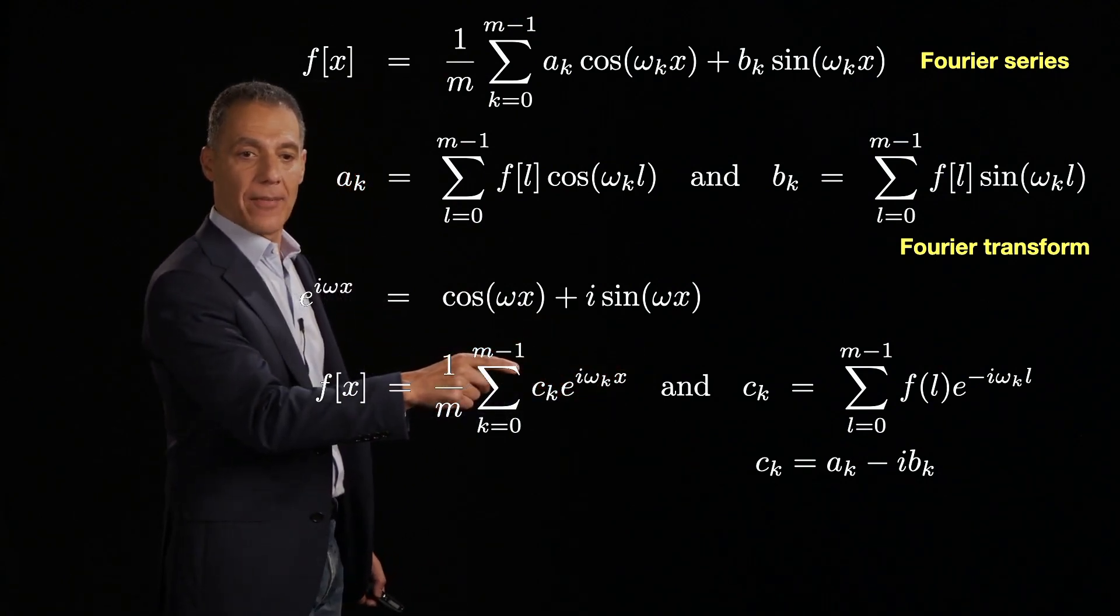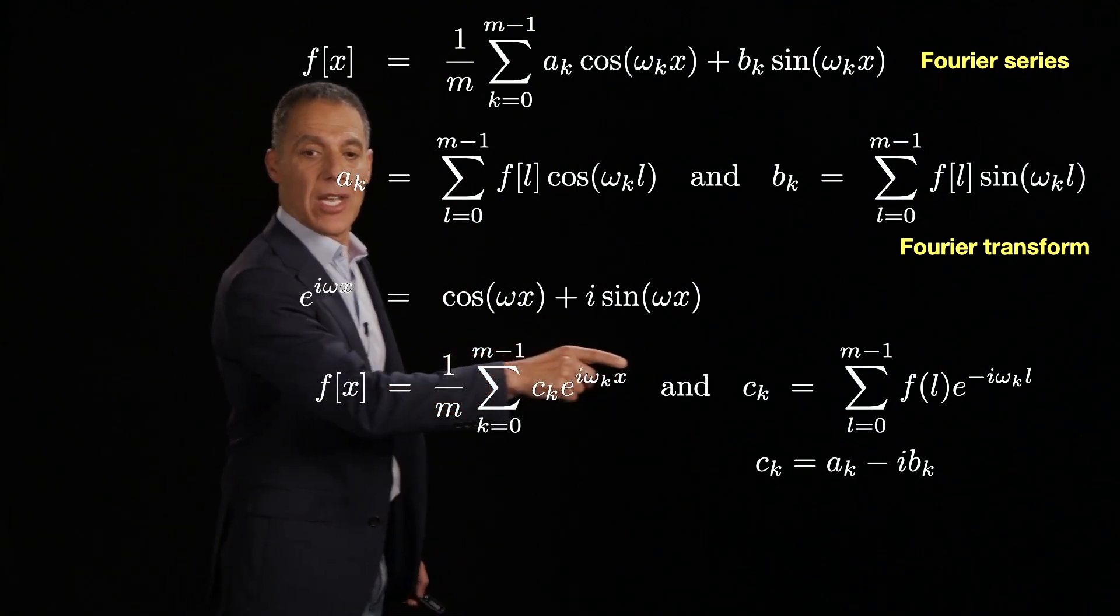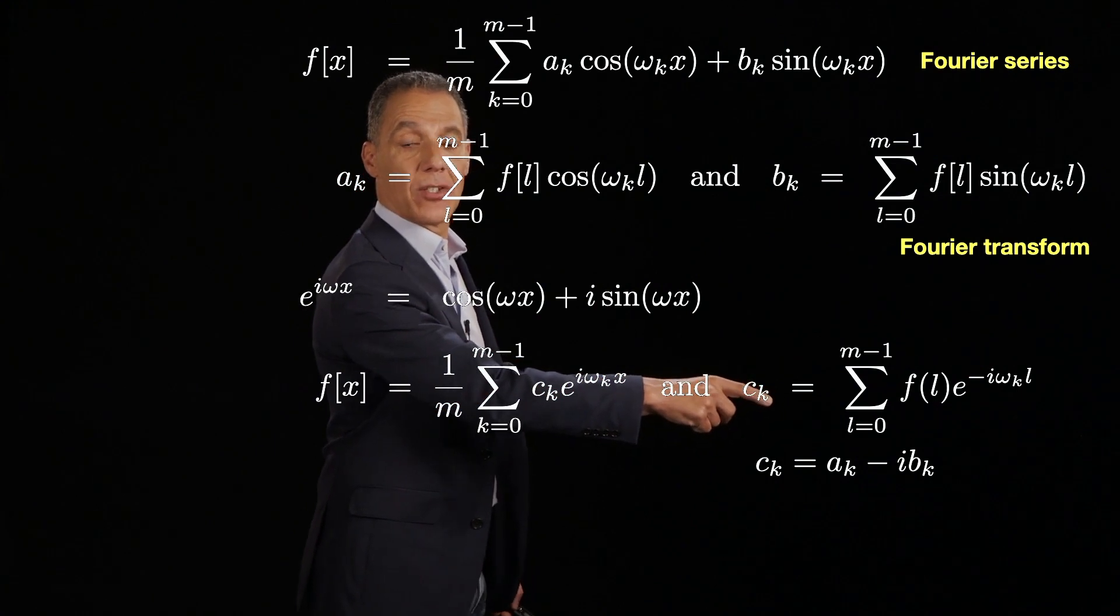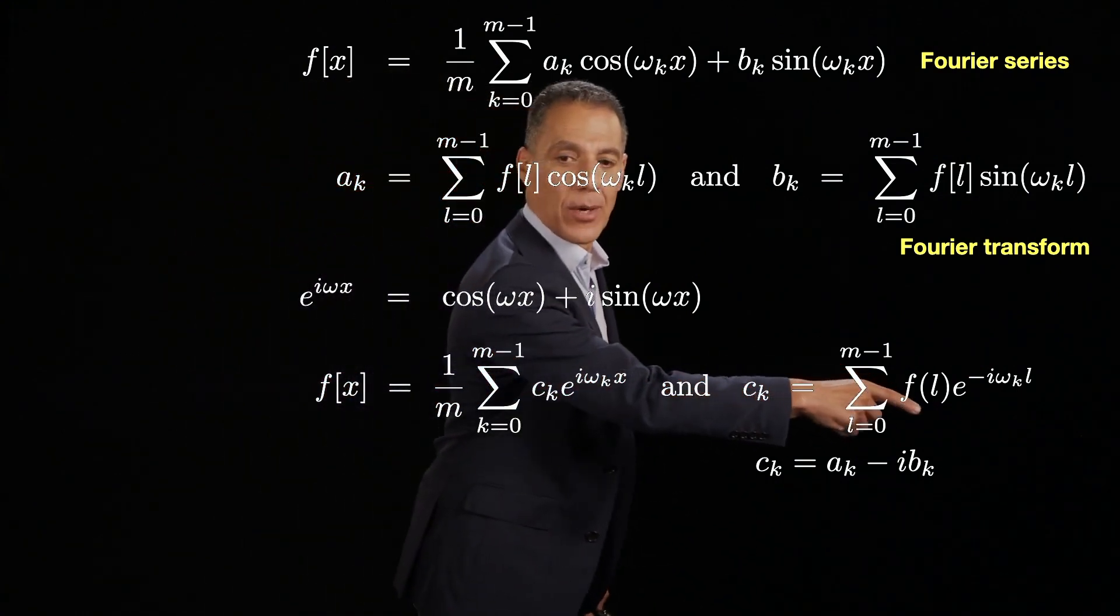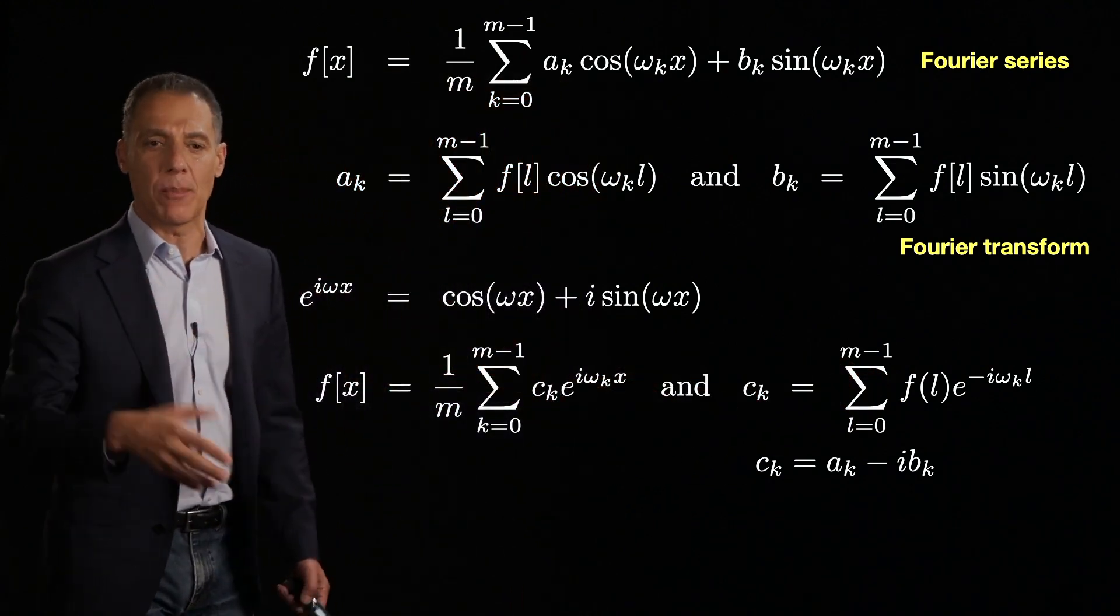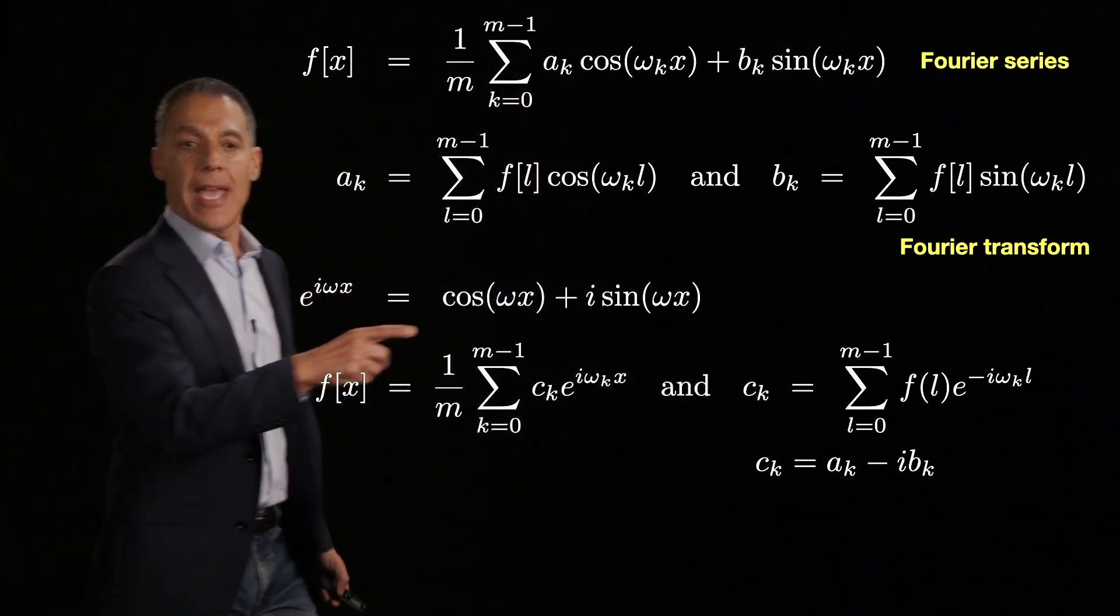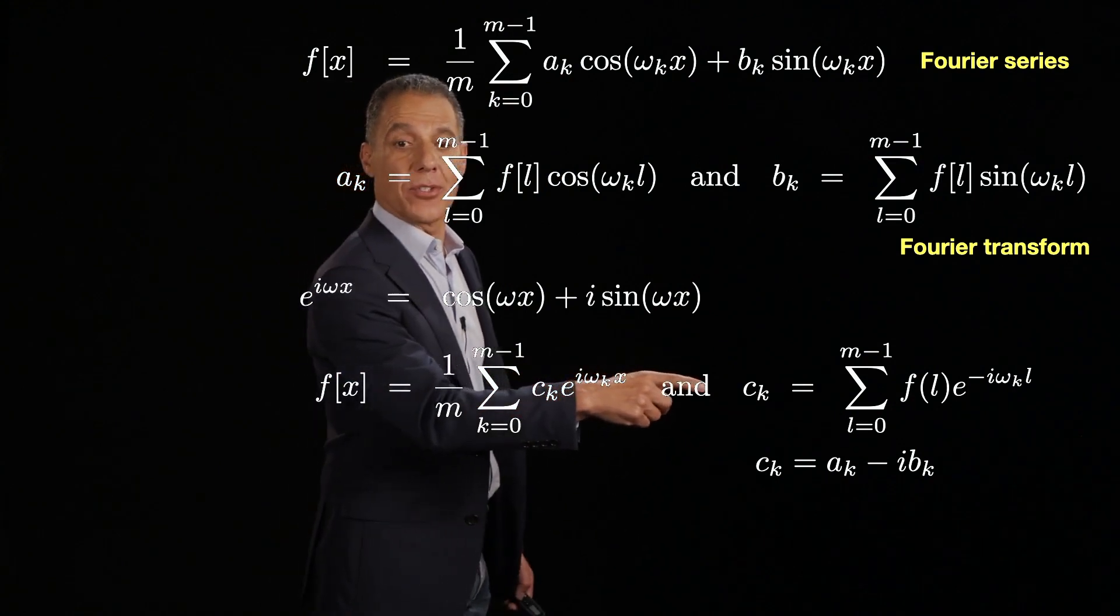Which of course is just that thing right there. And again, c_k, the scale factor on this complex exponential basis, is simply a dot product between the signal and the same basis, but we need a negative sign right there.